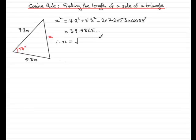x is equal to the square root of 39.4865 and so on. If you do that, you should find you get 6.283 and so on. We need to give this to a suitable degree of accuracy. These measurements were given to one decimal place, so I think we should give this to one decimal place, and that would be 6.3 meters. Don't forget the units and the approximation that you've used, one decimal place.